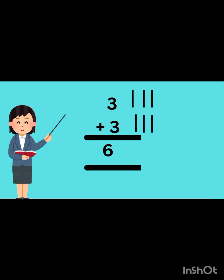Now we have another example: three plus three. We will draw three lines and three lines in front of three. It makes six — one, two, three, four, five, six.